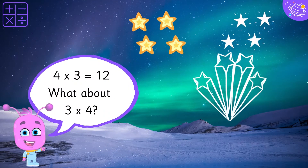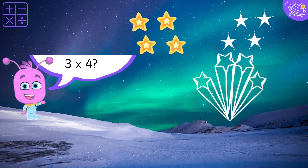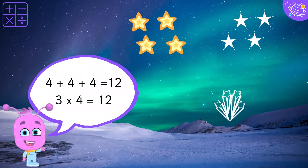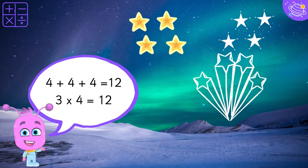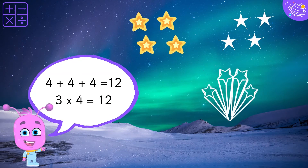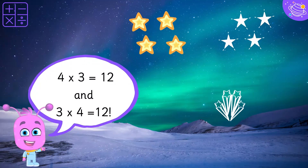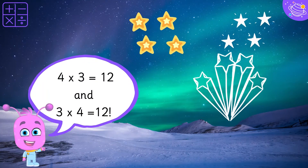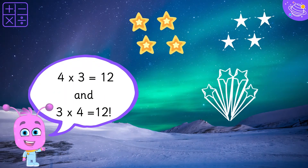What about 3 times 4? 4 plus 4 plus 4 equals 12. 3 times 4 equals 12. And 3 times 4 equals 12 — both 4 times 3 and 3 times 4 equal 12.